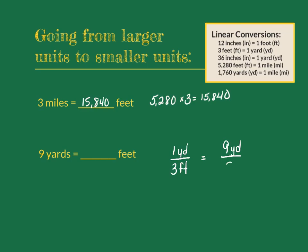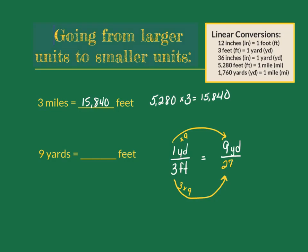Then I will place a question mark for the feet, the part I don't know. Now I can solve for the question mark, making the fractions equivalent. In order to go from 1 to 9, I would multiply the 1 by 9. Since I need my fractions to be proportionally correct or equivalent, I would need to do the same thing to my bottom number, which is multiply by 9. When I multiply 3 by 9, I get my new denominator and the answer to this problem, 27. There are 27 feet in 9 yards.